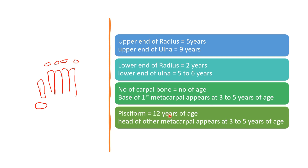The pisiform carpal bone appears at 12 years of age. For the number of carpal bones: the number of carpal bones roughly equals the number of years of age. We write age in a range, not an exact year. If you see one carpal bone it is around one year of age, two carpals around one to two years, and so on from three to seven according to the number of carpal bones. This is a simplified method to make age estimation easier.